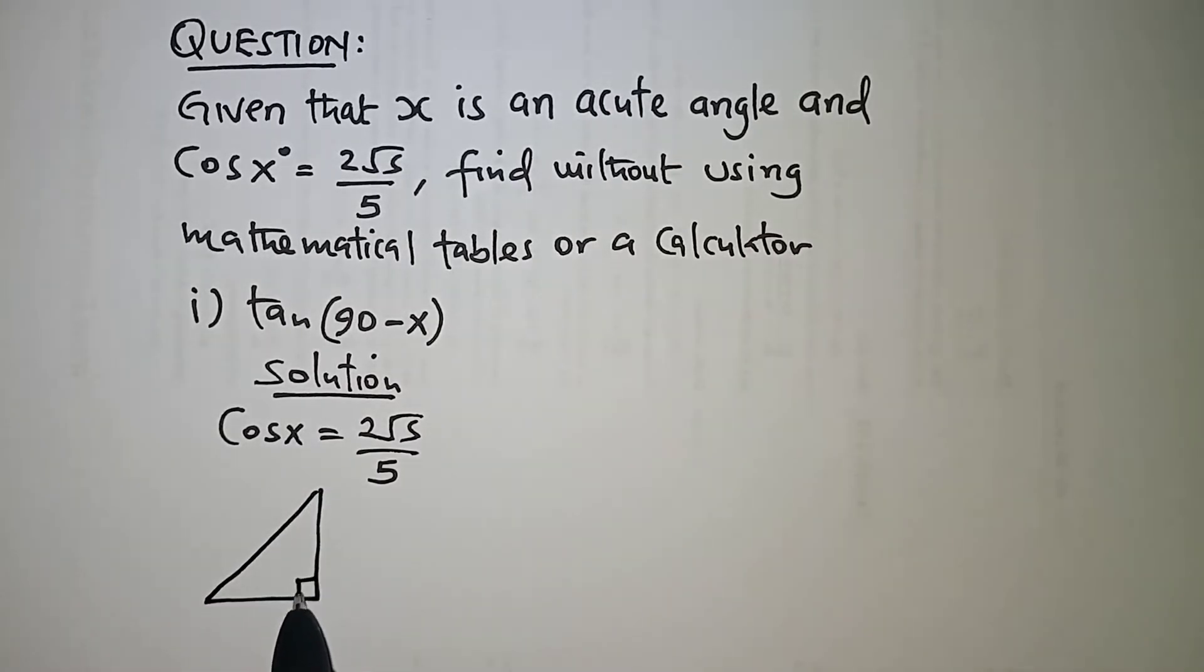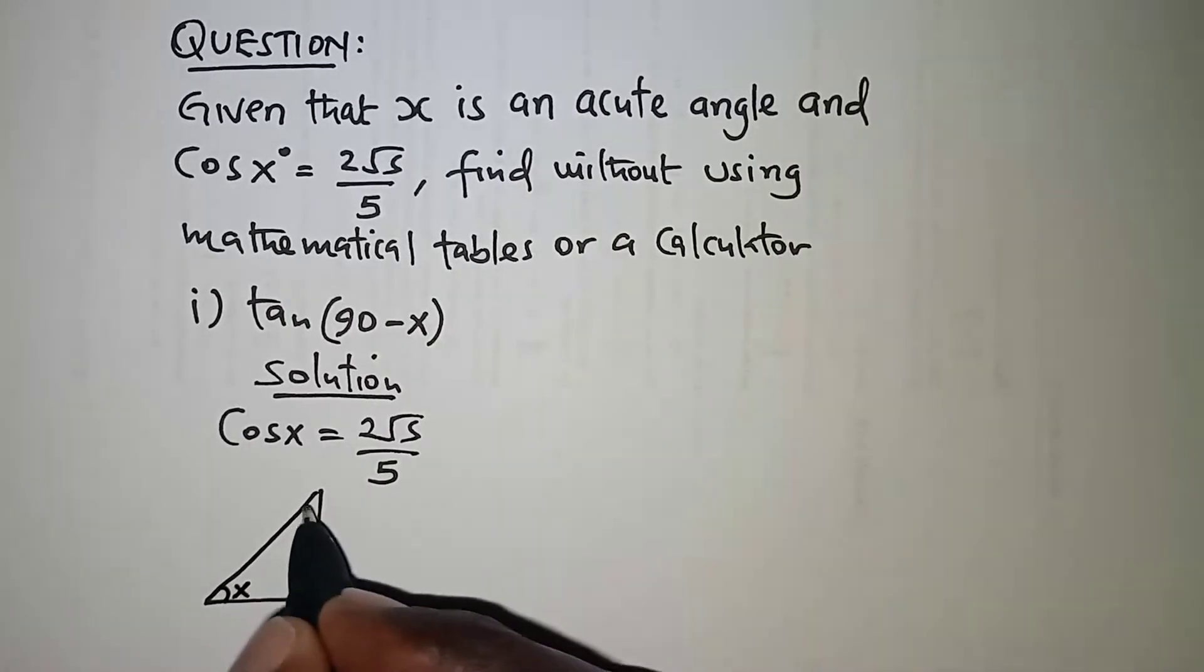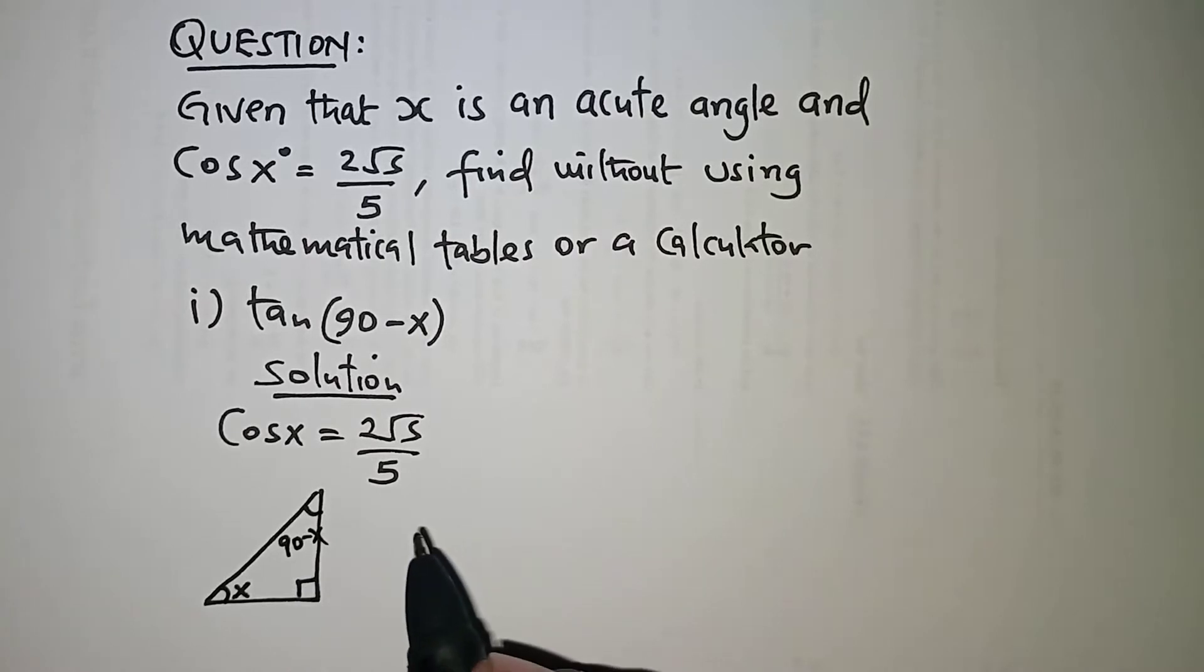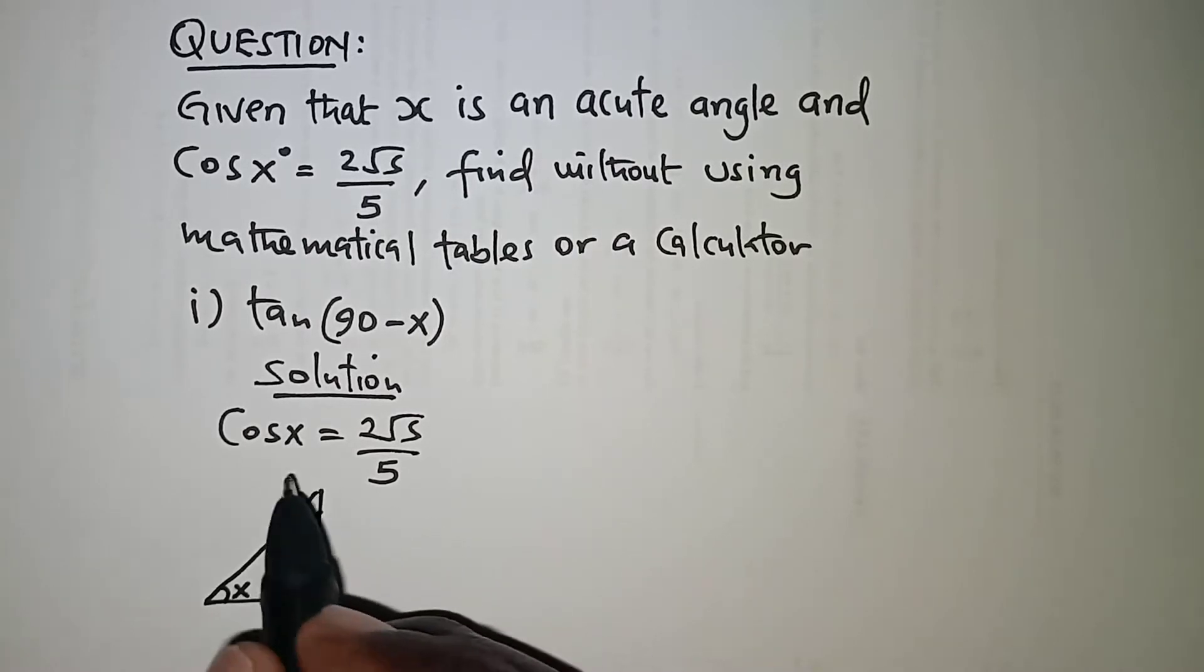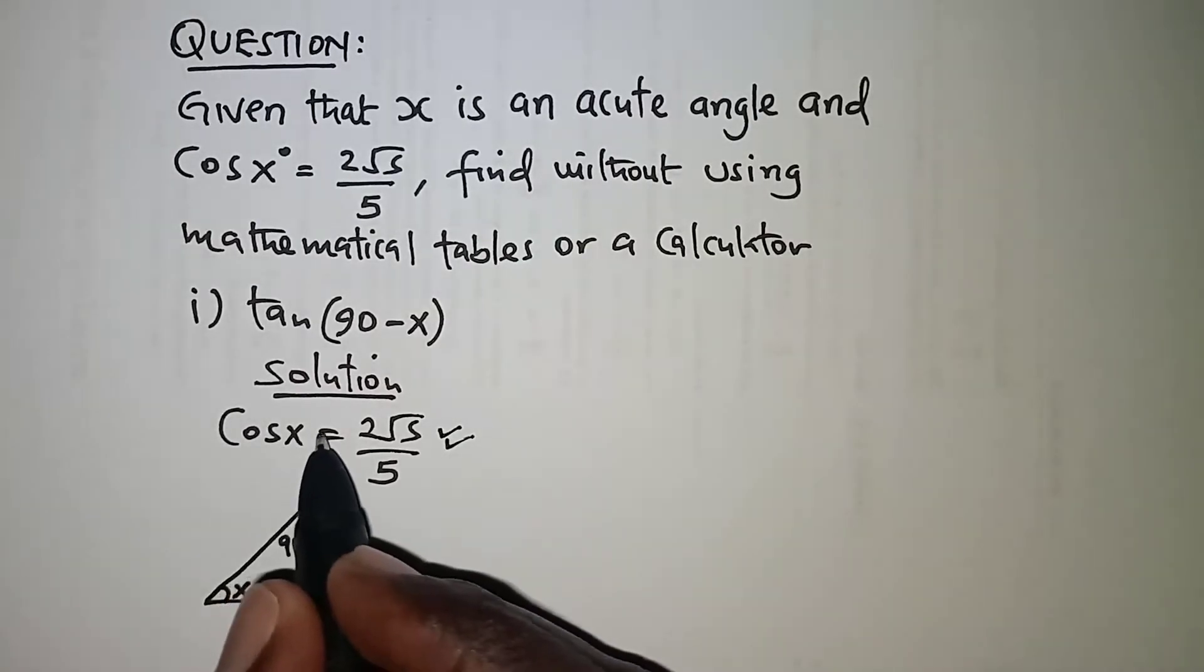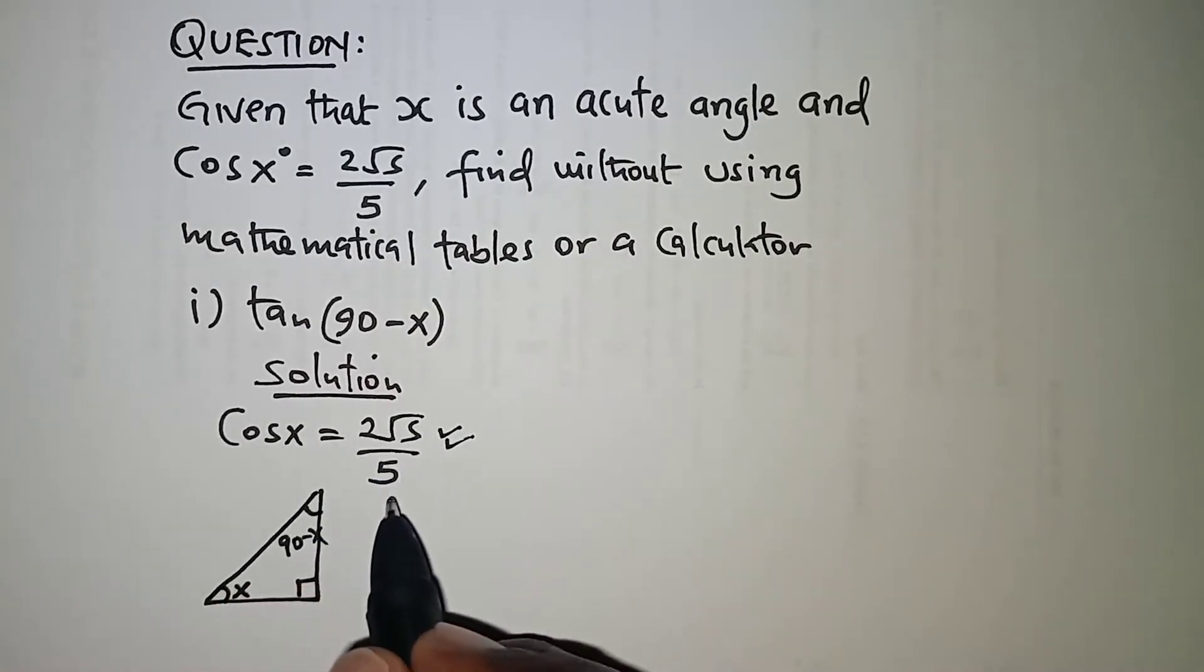So long as we have trigonometric ratios we always think of right angle triangles so that if this angle here is x then the other side is 90 minus x. So with this we can interpret the ratio here. Cosine of x is 2 root 5 over 5.